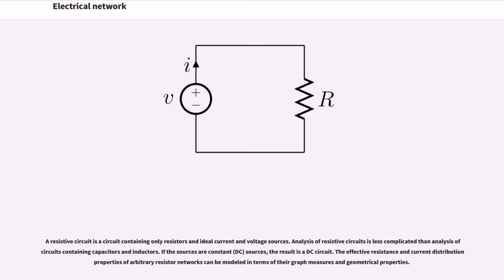A resistive circuit is a circuit containing only resistors and ideal current and voltage sources. Analysis of resistive circuits is less complicated than analysis of circuits containing capacitors and inductors. If the sources are constant, DC sources, the result is a DC circuit.